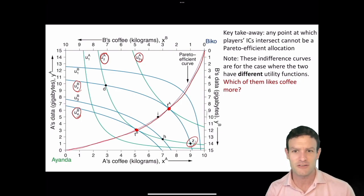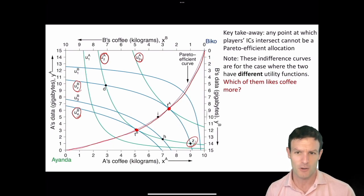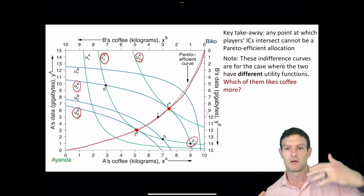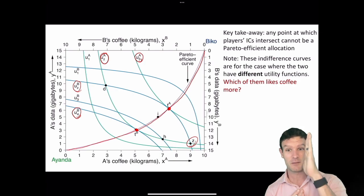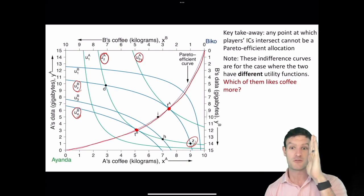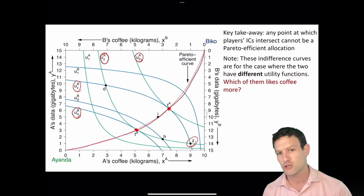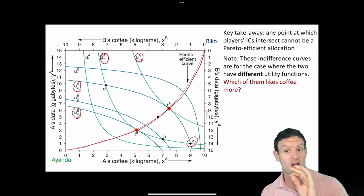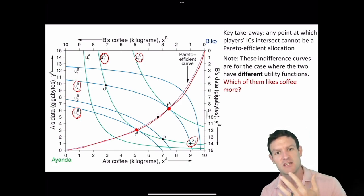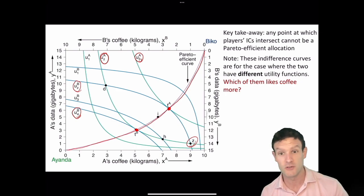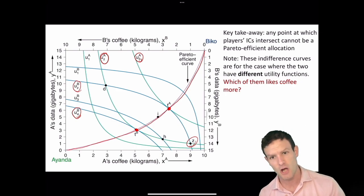This is a general idea for the Pareto efficient curve — this particular one is in fact curved. But we're going to look at ones later where we could have a linear Pareto efficient curve going from one corner of the box to the other, or a linear PEC going from top to bottom. The only thing we need to find the Pareto efficient curve is that the indifference curves are tangent at those points — the shape depends on the players' preferences.